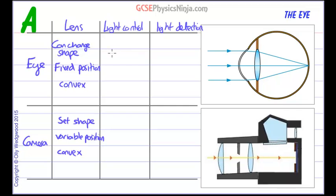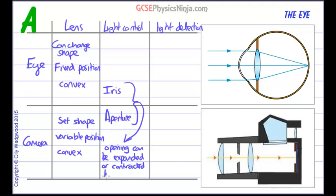What about light control? In the case of the eye the iris is that ring of muscle which can expand or contract. And in the camera the aperture. So both of these we'll put down here. So the opening can be expanded or contracted to let more or less light in. So that's the same for both the eye and the camera.